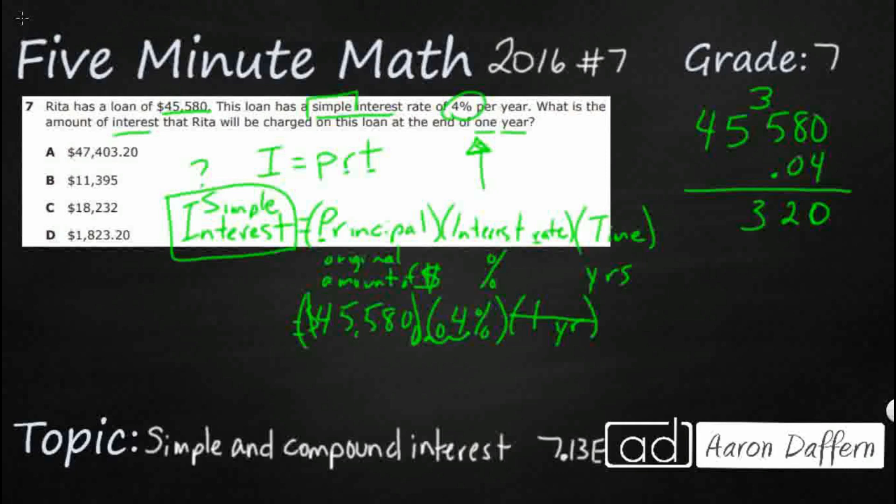And then 4 times 4 is 16. Add the 2, 18. Now, it might seem like you're going to pay more in interest than the original principle. The principle is 45,580.